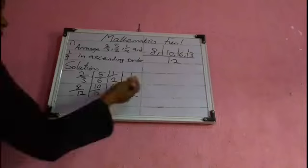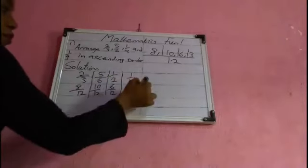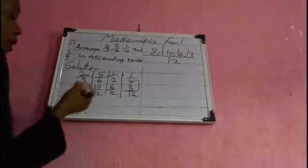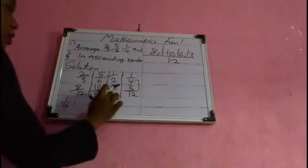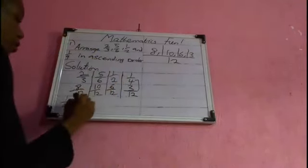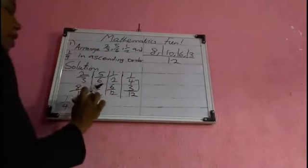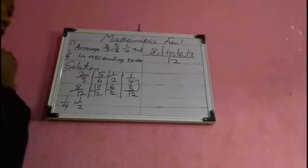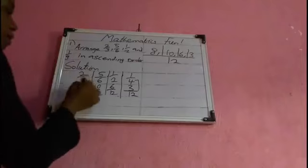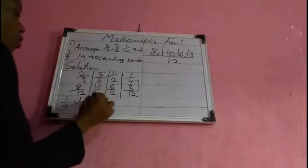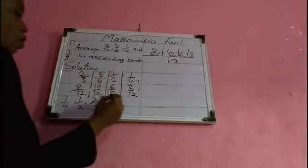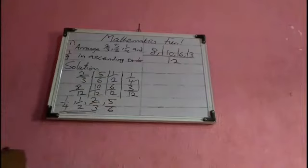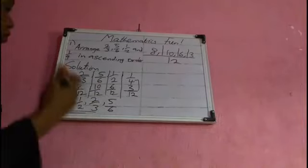Looking at these now, which is the smallest? Three over twelve — its parent is 1/4. After 3/12, the next is 6/12 — its parent is 1/2. Then between 8/12 and 10/12, the smaller is 8/12 — its parent is 2/3. The biggest is 10/12 — its parent is 5/6.